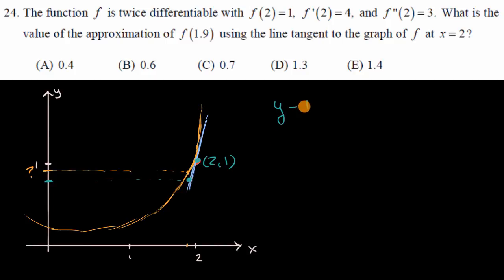So y minus 1 is going to equal the slope of our tangent line, which we know is 4, times x minus the x value that corresponds to that y value. So x minus 2.